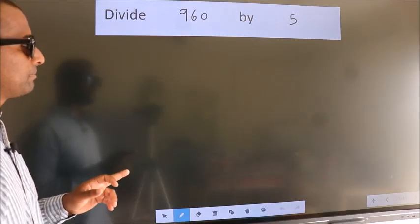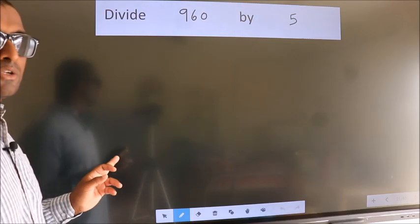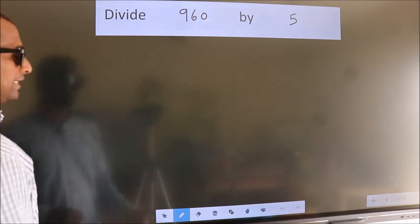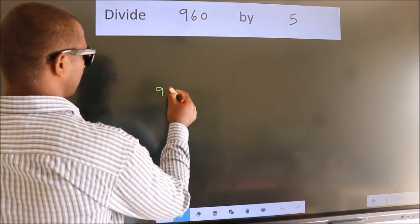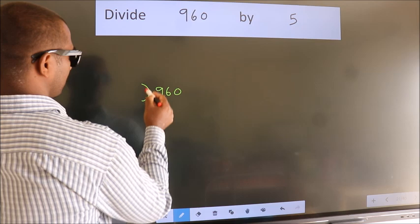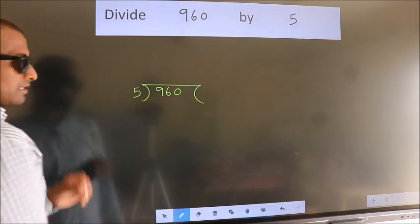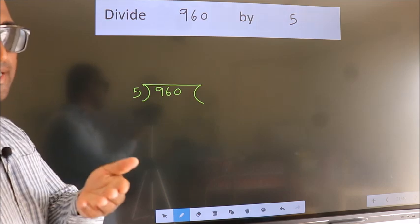Divide 960 by 5. To do this division, we should frame it in this way. 960 here, 5 here. This is your step 1. Next.